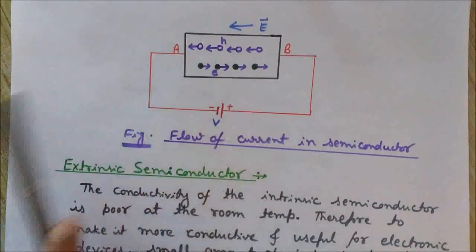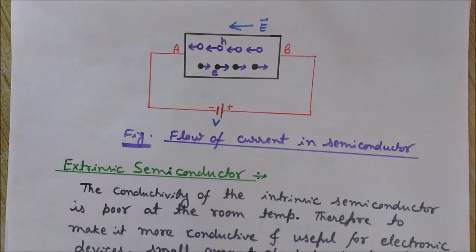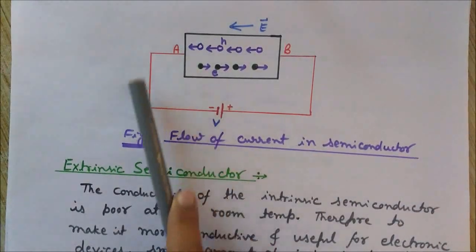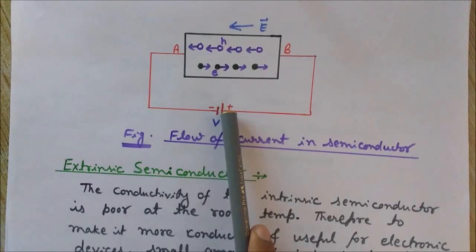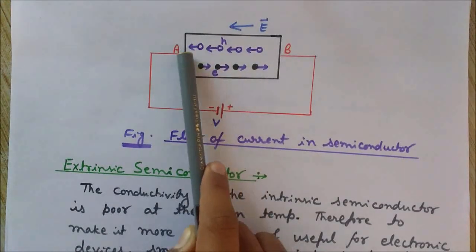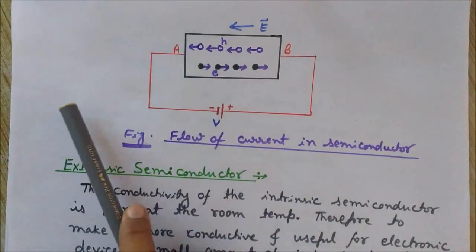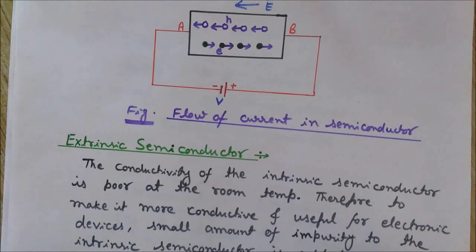When we apply an external voltage source to the intrinsic semiconductor, this is what happens. One more important point: in the external circuit, the flow of current is only due to the movement of electrons. The holes do not come out from the semiconductor.